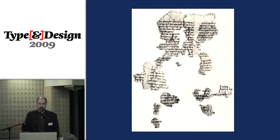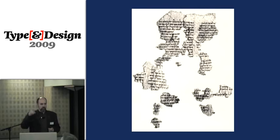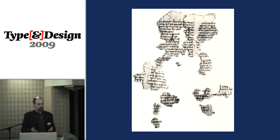Most digital typography — the whole system from character encoding to glyph display — has been largely built around the assumptions of modern text: text produced for you to read by someone who's probably a contemporary of yours, using standard spelling, standard grammar, all the things we take for granted in most of what we read on a daily basis.